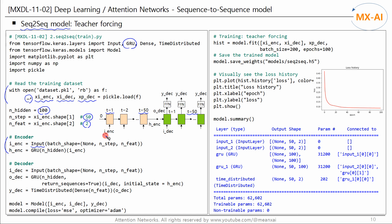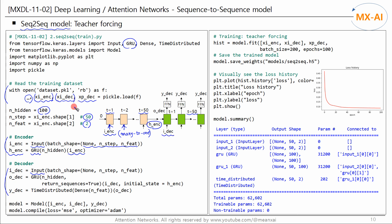We create an input layer that receives the encoder input data. The input data is three-dimensional. Then we create a GRU recurrent layer and feed the encoder input into this layer. The GRU recurrent layer in the encoder is many-to-one, and Hinc is the last hidden state. Next, we create a decoder — an input layer that receives the decoder input data, which is also three-dimensional. Then we create a GRU recurrent layer and feed the decoder input into this layer.